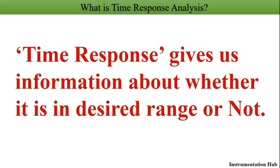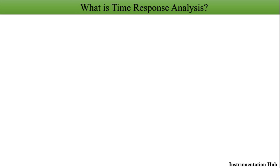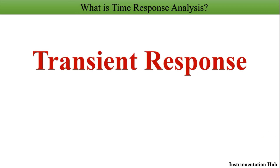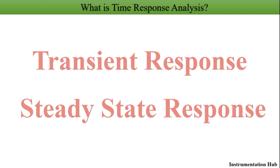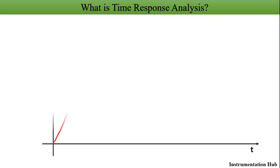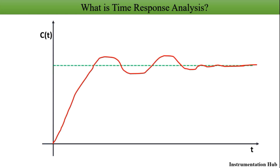On the basis of time, time response can be divided into two parts: the first is transient response and the second is steady state response. Look at the figure on the screen — this is the output of a system with respect to time. The green line represents the set point value of that system. Now let's differentiate between transient response and steady state response.